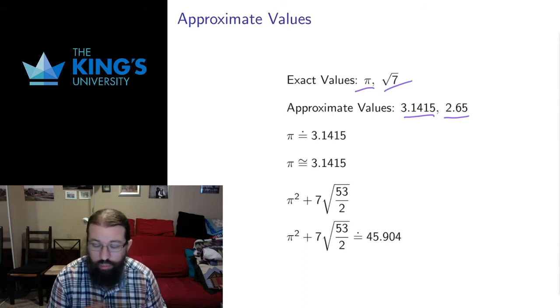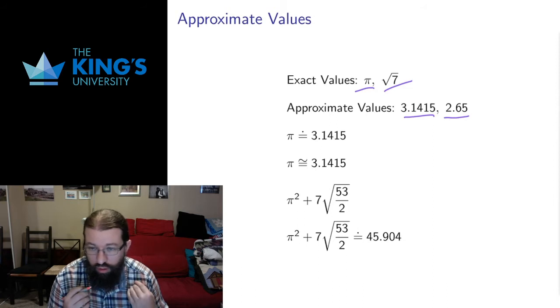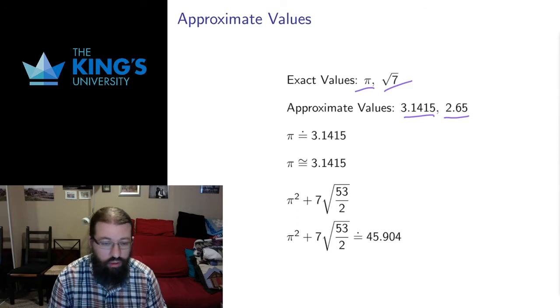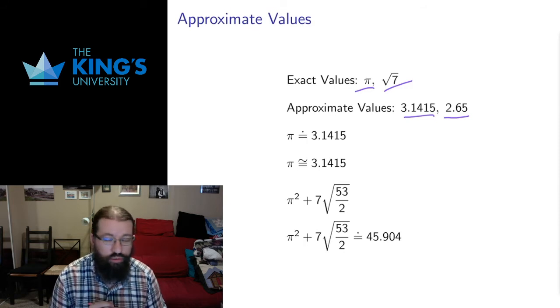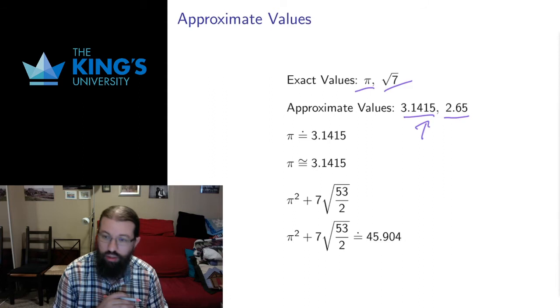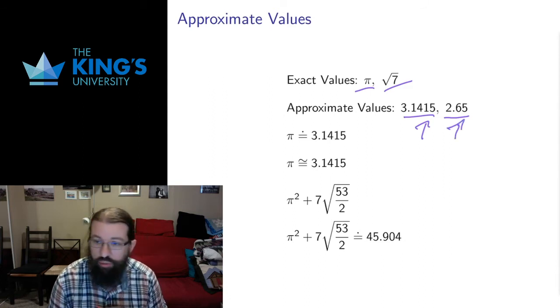So for a lot of applied mathematics, for a lot of measurement, for a lot of things we actually have to do in the world, it's going to be more valuable to have approximate values. This is balanced by the fact that when you calculate with approximate values, you tend to lose precision the more calculations you do. There's error in an approximate value. So the error in here is less than 1 in 10,000. The error here is less than 1 in 100.